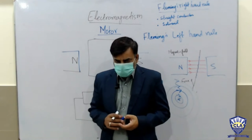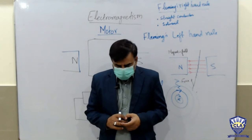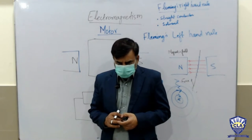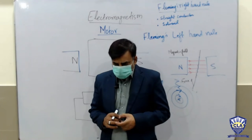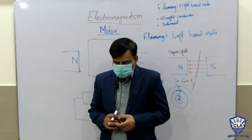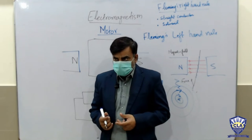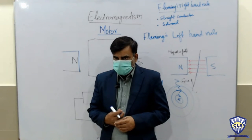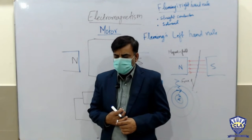A student attempts: first finger of the left hand points in the direction of the magnetic field, the second finger points in the direction of the current, then extend the thumb in the direction of the force. All three fingers are at right angles to each other.